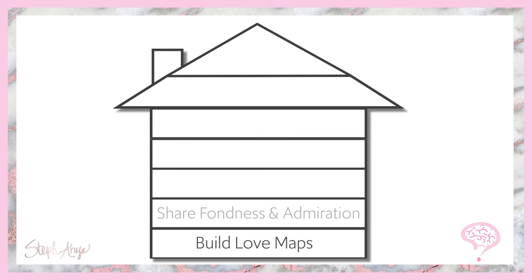The next level is to share fondness and admiration. This really boils down to being positive towards your partner — noticing the things they're doing right and commenting on it. Be affectionate, be respectful, and just have a relationship characterized by positive regard and admiration for your partner.